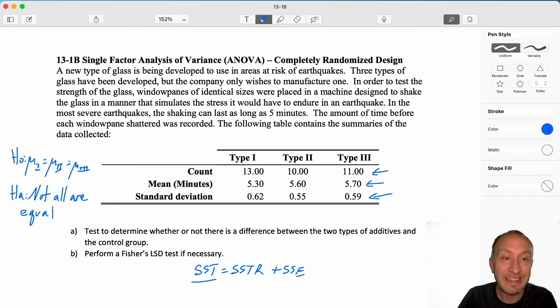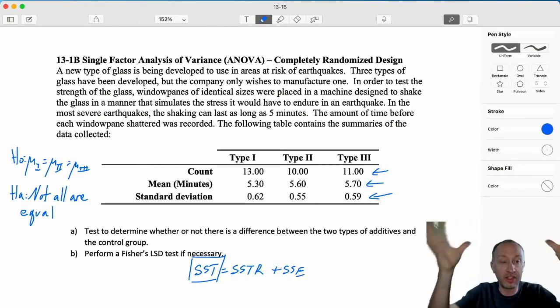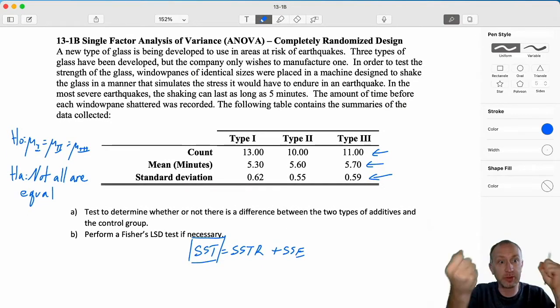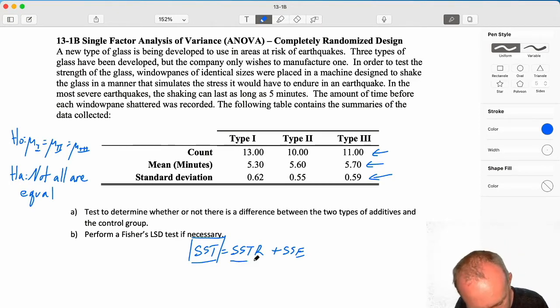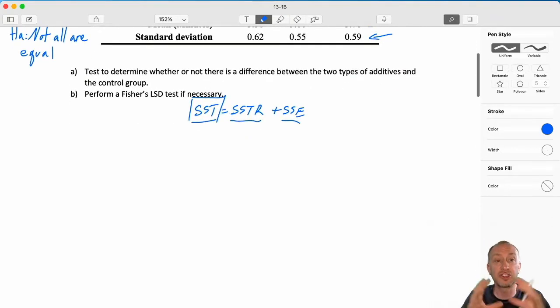If we treat this as though the null is true, this is our assumption. Then, what we are going to do is say, here's the total variation that exists in that sample - all of our samples together, treating it as one. Then, we want to partition out those two different sources of variation. There's that source of variation, which can be attributed to differences, if any, between treatments, and that which is random noise within each of those treatments.